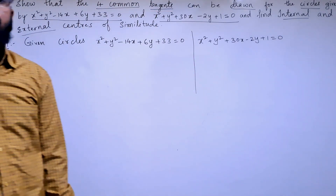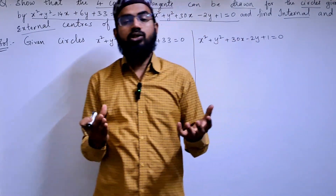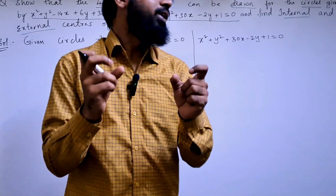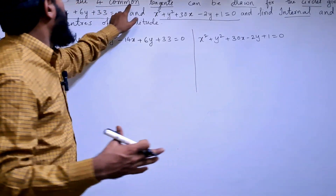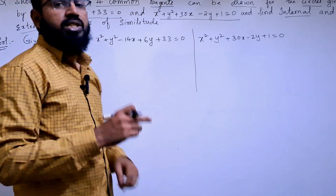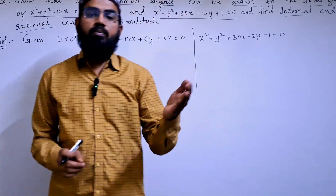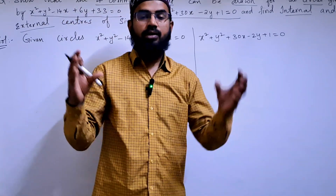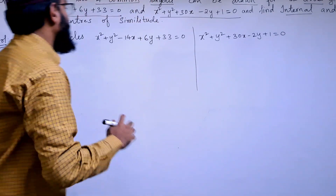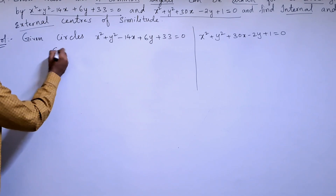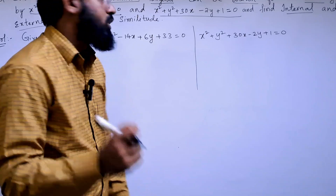Before starting the solution, the important point here is to find out whether we can draw four common tangents. That means the distance between C1 and C2 should be greater than r1 + r2 — the distance between the two centers should be more than the sum of their radii. So let us find the centers.